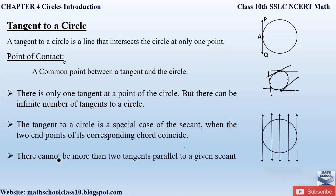There cannot be more than two tangents parallel to a given secant. Here on a circle there are three secants — secant 1, secant 2, and secant 3 — and there are two tangents: tangent 1 and tangent 2. A tangent intersects at a single point, while a secant intersects at two points. So for any given secant, there are exactly two tangents parallel to it — no more.